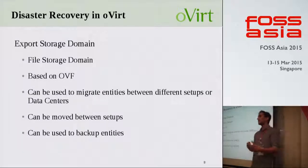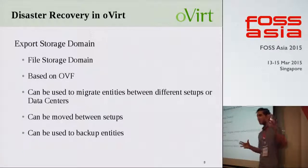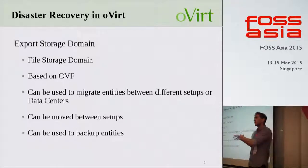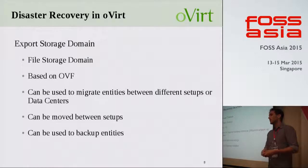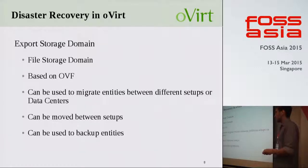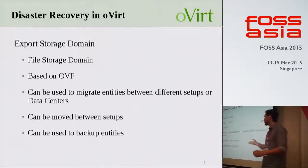Once a VM is exported to the export storage domain to be used as a backup, what actually happens is that we copy all the VM disks into this export domain, then take all the data from the database, convert it to an OVF file, and put it on the export storage domain. Once it's backed up and a disaster occurs, we can just use the export storage domain, import it to another data center, and import it back into the database. Among other things, you can use the export storage domain to migrate entities between different setups or data centers, and it can also be used to backup entities.